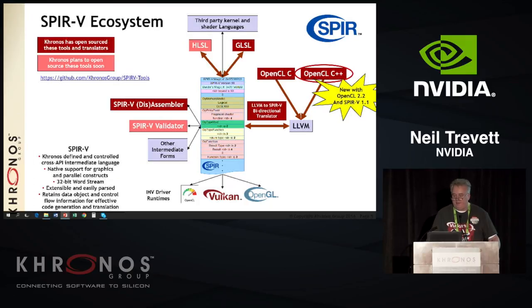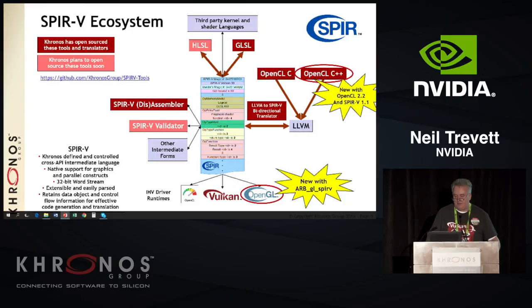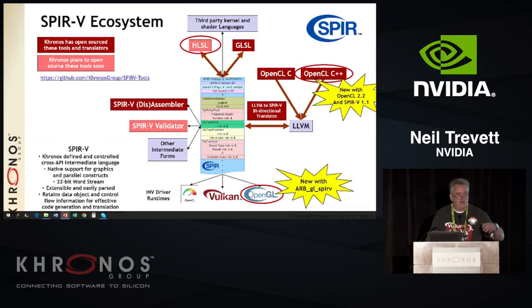Other new things with SPIR-V: OpenCL C++ support has been put in SPIR-V 1.1. With the GL extension, we can now begin to ingest SPIR-V. So those of you who went to Tim Foley's presentation saying we should have C and C++ as shading languages — the pieces are coming closer into place. There's also an HLSL to SPIR-V converter on GitHub — a straight HLSL to SPIR-V path — which is going to enable people with large investments in HLSL shader code to bring it into OpenGL and Vulkan.